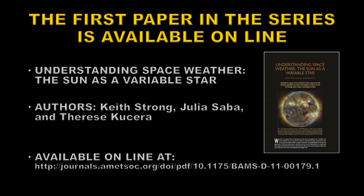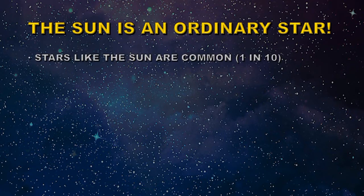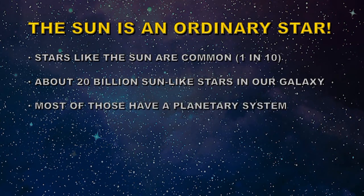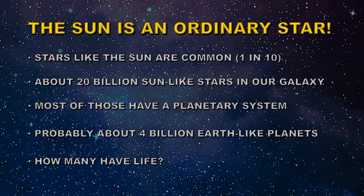Not many people know that the Sun is a star. In fact, it's quite an ordinary star. About 1 in 10 of the stars in this picture are Sun-like stars, which would make about 20 billion Sun-like stars in our galaxy. Most of those would have a planetary system, and about 1 in 5 of those planetary systems would have an Earth-like planet — so there are probably about 4 billion Earth-like planets in our galaxy. How many of those would have life is a very interesting thing to contemplate, though it's not the subject of this video.